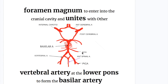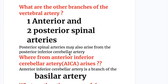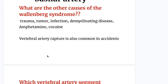What's the origin of the anterior inferior cerebellar artery? It's a branch of the basilar artery. So posterior inferior cerebellar artery is a branch of the vertebral artery, and anterior inferior cerebellar artery is a branch of the basilar artery. The other branches of the vertebral artery are one anterior and two posterior spinal arteries.